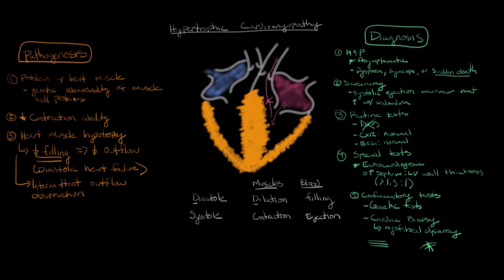To summarize: hypertrophic cardiomyopathy is a disease of the heart muscle caused by a genetic abnormality of muscle cell proteins resulting in myofibril disarray, which causes decreased contraction ability and subsequent heart muscle hypertrophy producing the characteristic signs and symptoms. It is screened by listening to the heart with a stethoscope, and the most important diagnostic test is an echocardiogram showing an increased septum-to-left-ventricular-wall-thickness ratio.